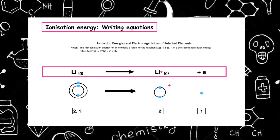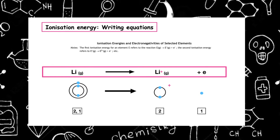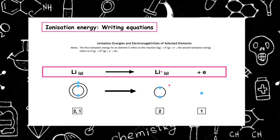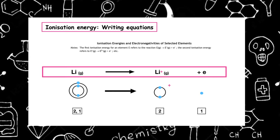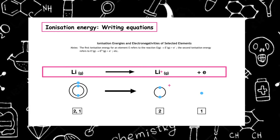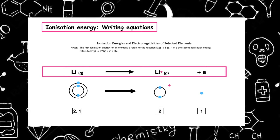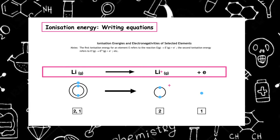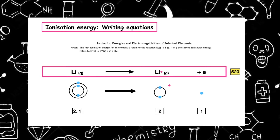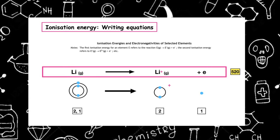On the left hand side of the equation we have a total of three electrons, and on the right hand side from the pictures we can also see that we have three electrons. Selecting the ionization energy from the data booklet, the first ionization energy has a value of 520 kJ per mole.